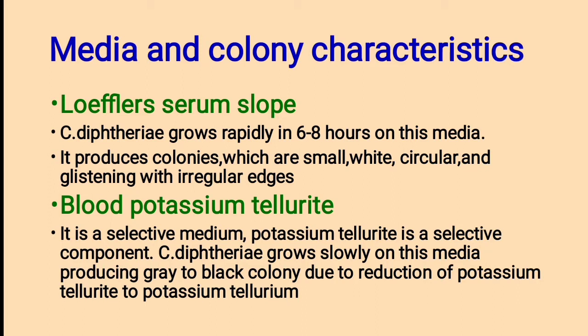The next medium is blood potassium tellurite, which is a selective medium. Potassium tellurite is the selective component. Corynebacterium diphtheriae grows slowly on this media, producing grey to black colonies due to the reduction of potassium tellurite to potassium tellurium.